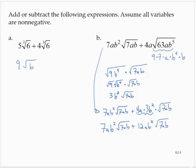These are now like radical terms, so I can combine the coefficients. I would have 7ab squared plus 12ab squared — and those are like terms — so I'd have 19ab squared times the square root of 7ab.